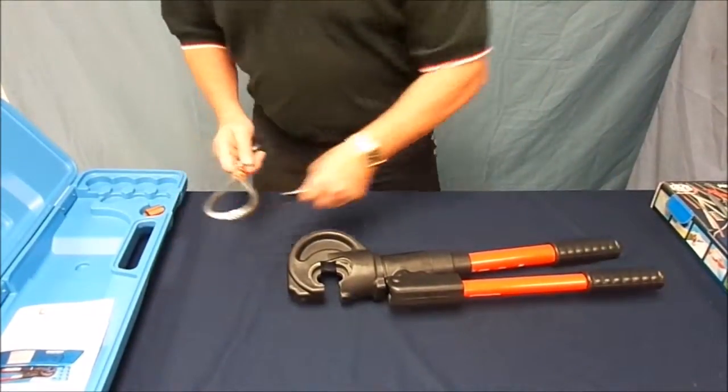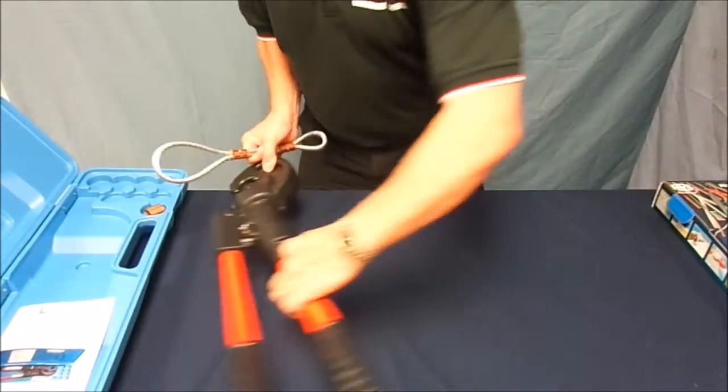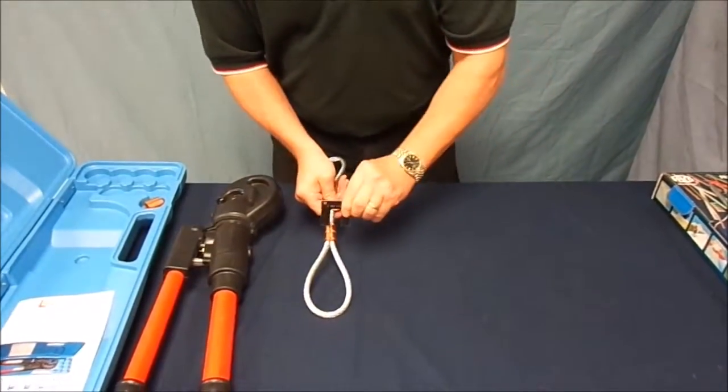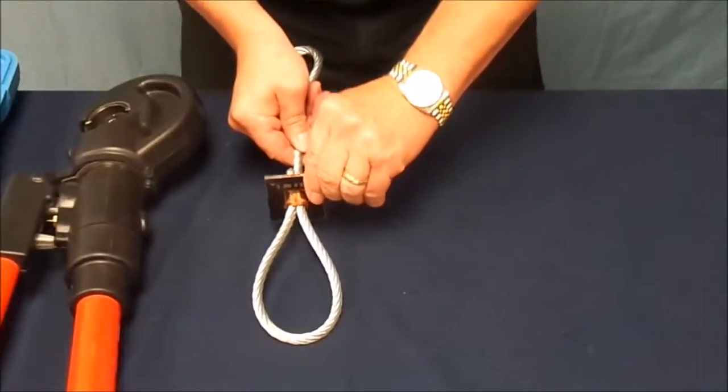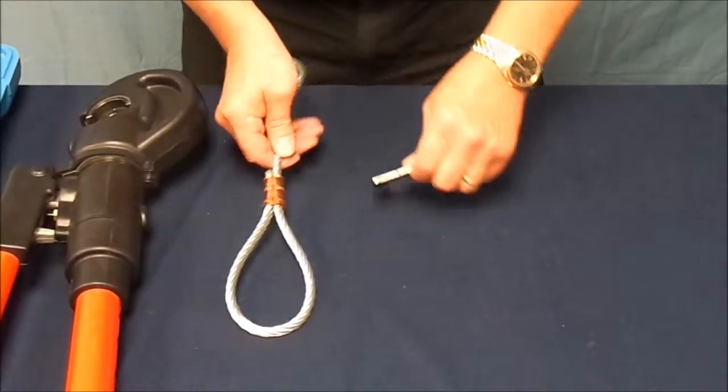Upon completion, check both compressions with the go gauge. This properly swaged fitting will generate full braking strength on the cable.